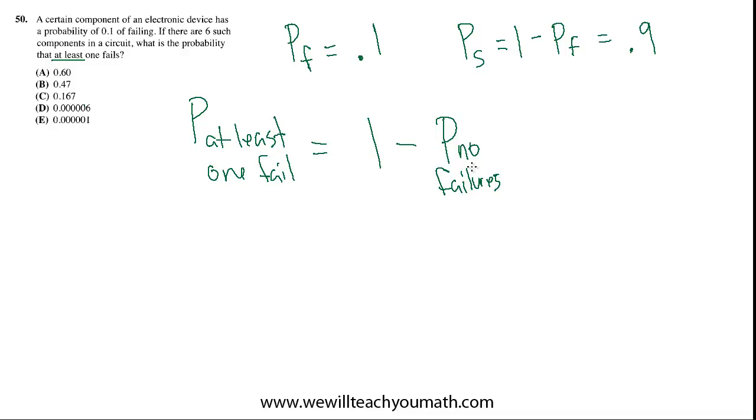Does that make sense? And there's only one way that you could have no failures, right? They all have to succeed. So, this is easier to compute.